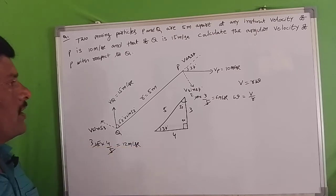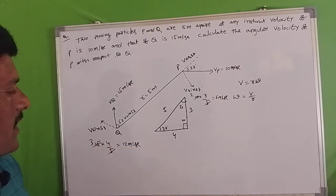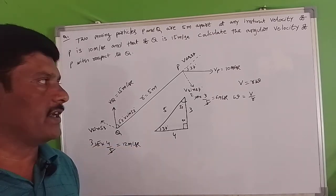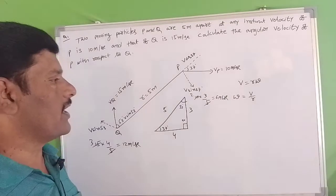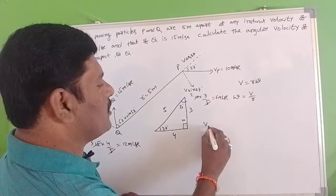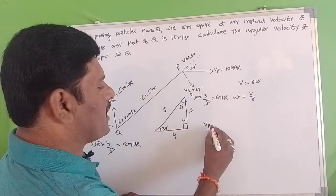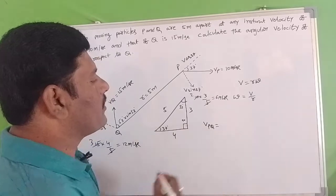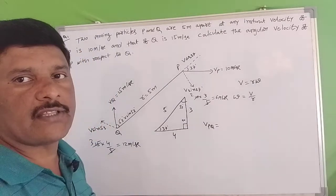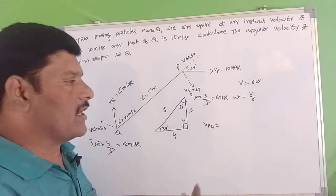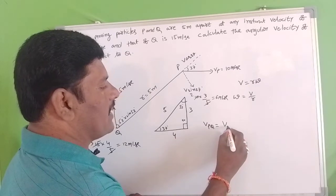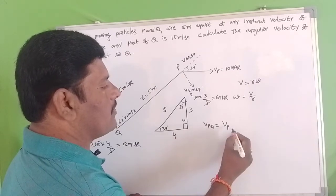The perpendicular distance R is 5 meters. Using the relative theory, the velocity of P with respect to Q can be written as velocity of P minus velocity of Q.